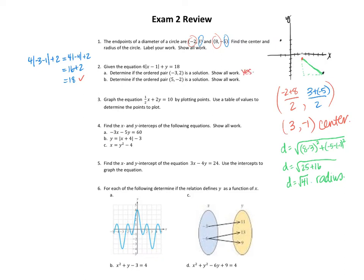Let's try the next one — determine if (5, negative 2) is a solution. So I'm going to plug in 5 for x and negative 2 for y. So I have 4 times the absolute value of negative 4 minus 2. So that's 16 minus 2, which is 14. So that one does not work.